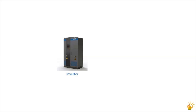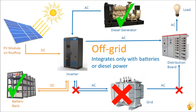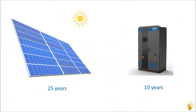The three types of solar plants boil down to three types of inverters: the grid-tie inverter that integrates only with grid power; the off-grid inverter that integrates only with batteries or diesel power but not with the grid; and finally the hybrid inverter that can integrate with grid power, diesel and battery power. A solar PV plant will last 25 years and the inverter can last 10 years or even longer. It is therefore important to choose an inverter keeping in mind both current and future requirements.